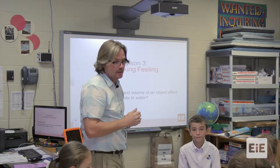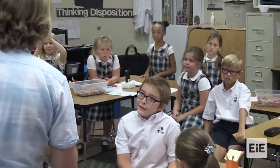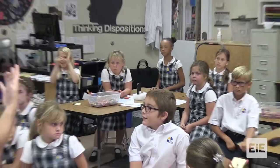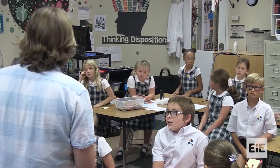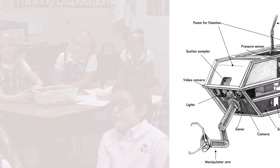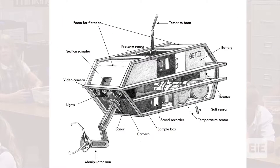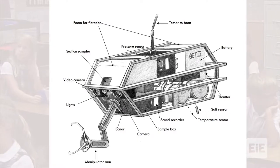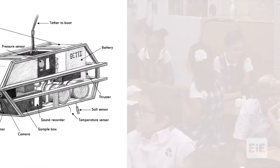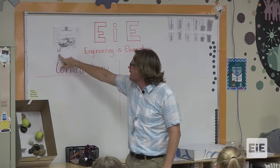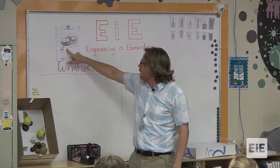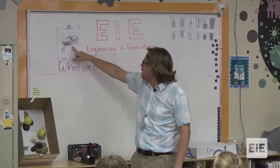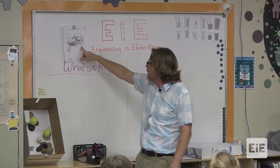What's the time span that we have? I love time questions. Very good — time. We always have to know the time. Time affects quality. So here I have the diagram of a submersible. We have foam for flotation, a suction sampler that goes down and picks up samples, video camera, lights, manipulator arm, sonar, camera, sample box, sound recorder, and temperature sensor.